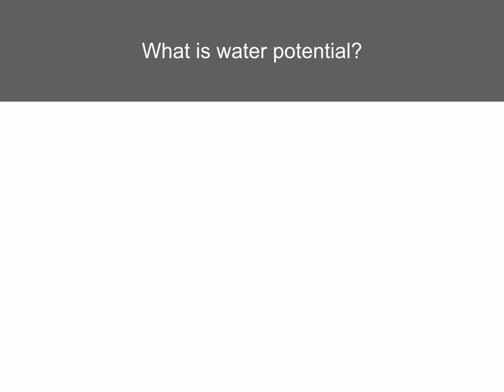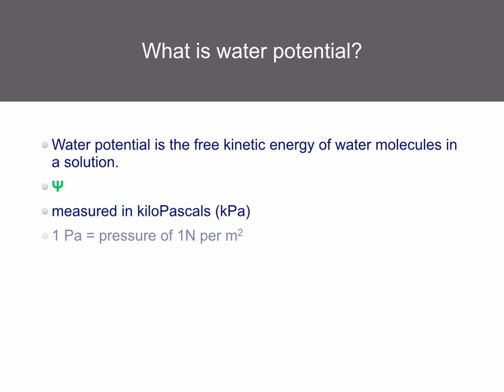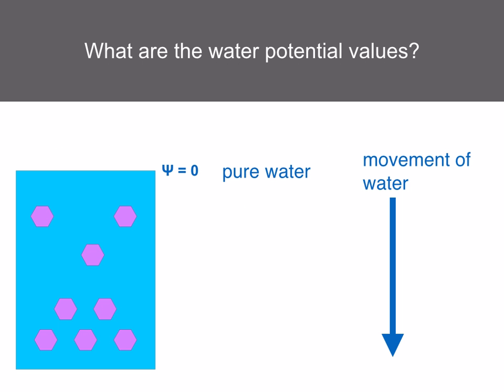Water potential is the free kinetic energy of water molecules in a solution, represented by the symbol psi (ψ). It's measured in kilopascals, where one pascal is the pressure of one newton per meter squared. Pure water has a water potential of zero kilopascals. Adding any solute makes the water potential become more negative. Water moves from high water potential to low water potential — high being zero, low being a very negative number.